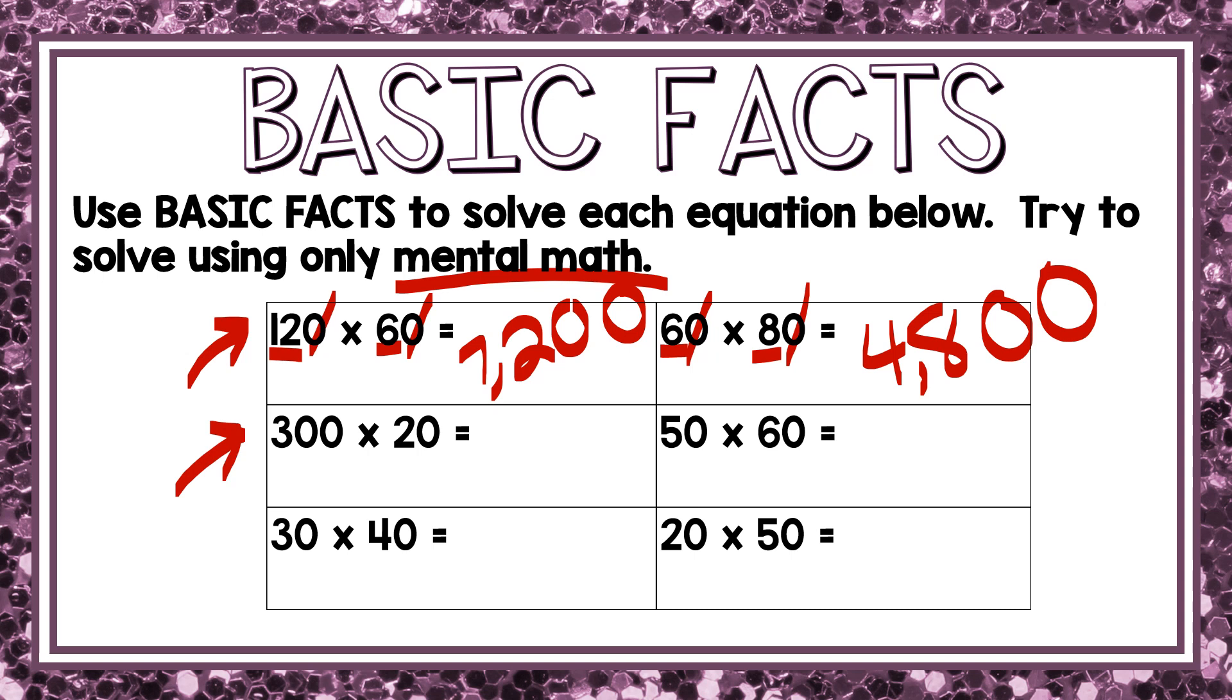Let's look at 300 times 20. This one's pretty straightforward. 3 times 2 is 6. And I have one, two, three zeros. And those three zeros are going to go at the end of my answer. Anytime I multiply times a number that has a zero at the end, my answer will have a zero at the end.